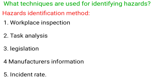What techniques are used for identifying hazards? Hazard identification methods: 1. Workplace inspection. 2. Task analysis. 3. Legislation. 4. Manufacturer's information. 5. Incident data.